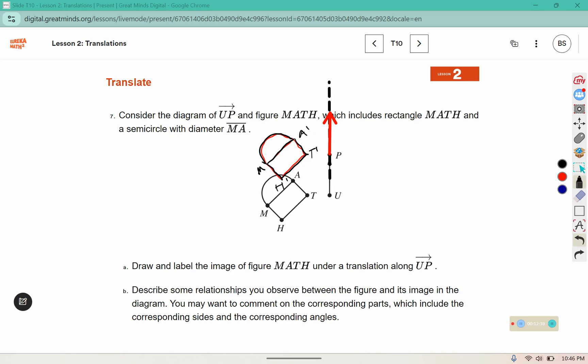Describe some relationships you observe between the figure and its image in the diagram. You may want to comment on the corresponding parts which include the corresponding sides and the corresponding angles. I noticed that the angles remain the same, it looks like a 90 degree angle. The angles remain the same. It appears that the side lengths remain the same.